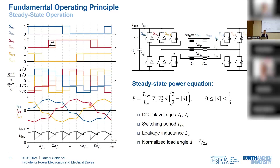We have two more phases, shown here as well with the phase shift of 120 degrees. The power transferred by this means can be described by the steady-state power equation shown here, shown only for load angles below 60 degrees — or in normalized terms below one sixth — because load angles above 60 degrees would lead to more reactive power and therefore an efficiency drop. I concentrated on this more efficient operating range.